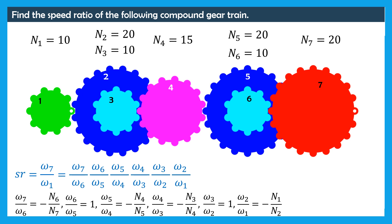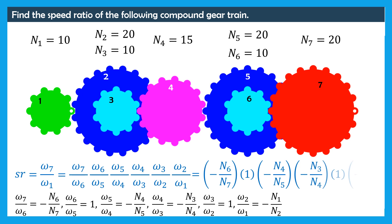Now, let's consider the expression of the speed ratio omega 7 over omega 1. We can substitute the ratios omega 7 over omega 6, omega 6 over omega 5, omega 5 over omega 4, omega 4 over omega 3, omega 3 over omega 2, and omega 2 over omega 1 by their expressions. Thus, the speed ratio omega 7 over omega 1 is equal to: minus N6 over N7, times 1, times minus N4 over N5, times minus N3 over N4, times 1, times minus N1 over N2.